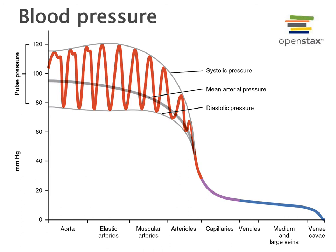Blood pressure is usually measured in a muscular artery such as the brachial artery in the arm. We can measure the values of systolic and diastolic pressure and calculate the corresponding pulse pressure. We can also calculate the mean arterial pressure, which is a time-weighted average of blood pressure — not simply systolic plus diastolic divided by two. Instead, mean arterial pressure is calculated as one-third systolic pressure plus two-thirds diastolic pressure, reflecting the longer amount of time the heart spends in diastole compared to systole.